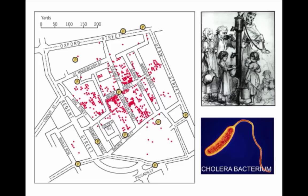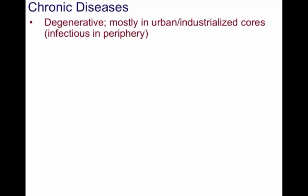Dr. Snow and his colleagues advised people to boil water, but it would be a long time before his advice reached all those who needed to know, and many people simply did not have the ability to do so. Chronic diseases are associated with longevity of life — these are degenerative diseases mostly found in the urbanized and industrialized cores of the world, whereas more infectious diseases occur in the periphery.